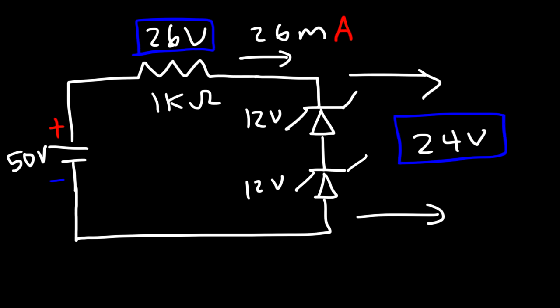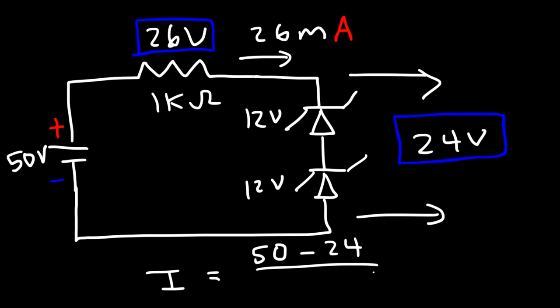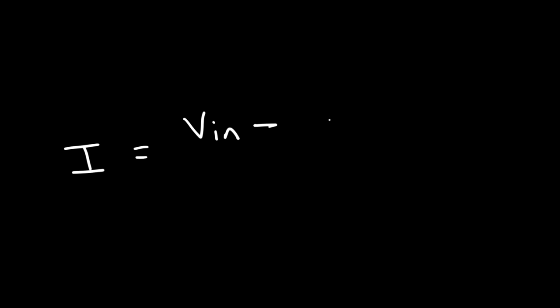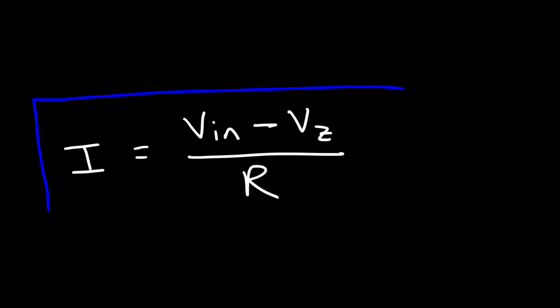A simple way to calculate the current is: take the input voltage of 50, minus the total reverse voltage of the two Zener diodes which is 24, then divide by the 1 kilohm resistor (1000 ohms). So 26 divided by 1000 is 0.026 amps, or 26 milliamps. The generic formula is: current = (input voltage minus total reverse Zener voltage) divided by the resistance in the circuit.